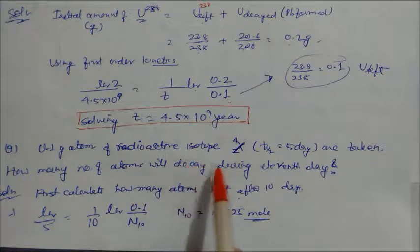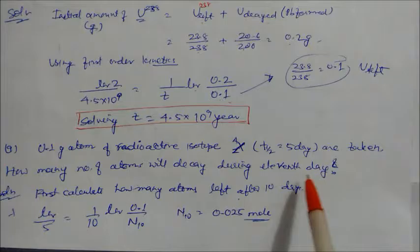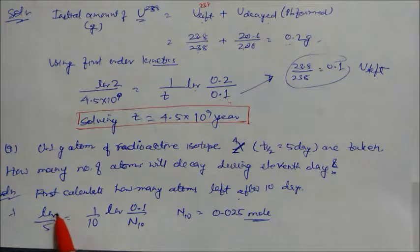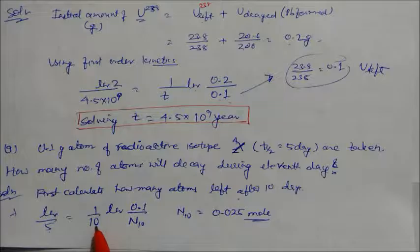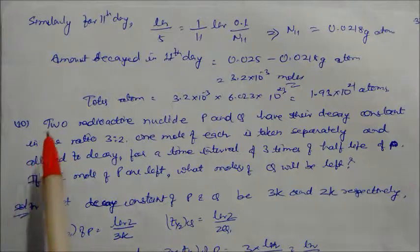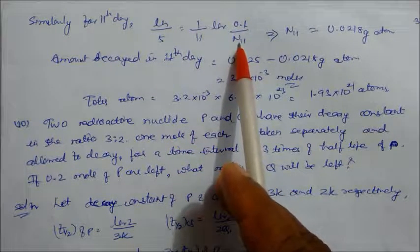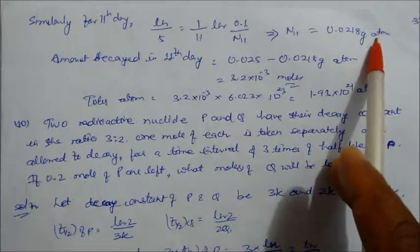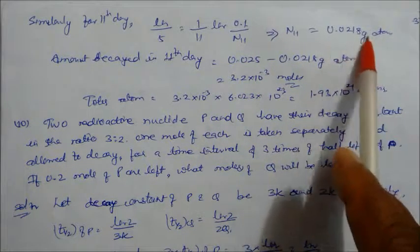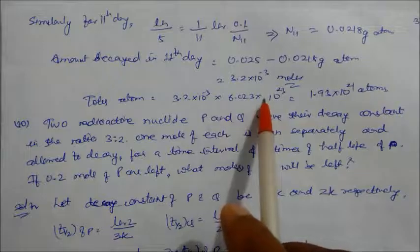Problem 9: 0.1 gram-atom of radioactive isotope X with half-life 5 days is taken. How many atoms will decay during the 11th day? Calculate atoms left after 10 days using first order kinetics with t½ = 5 days. Then calculate atoms left after 11 days. The amount decayed on the 11th day = (atoms at day 10) minus (atoms at day 11). Multiplying by Avogadro's number gives the total atoms decayed on the 11th day.